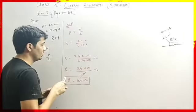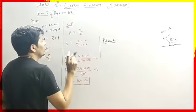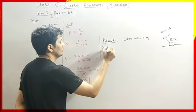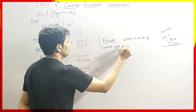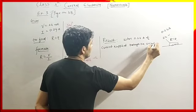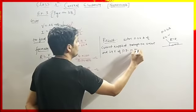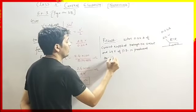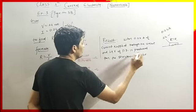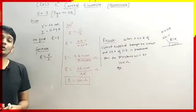So we have to write the result now. The result will be: when 0.24 ampere of current is supplied through the circuit and 24 volt of potential difference is applied, then the resistance will be 100 ohm. This is our answer. This is the way you have to solve the problem.